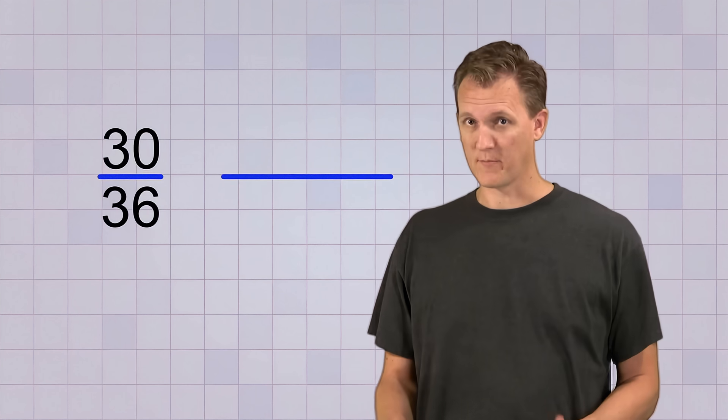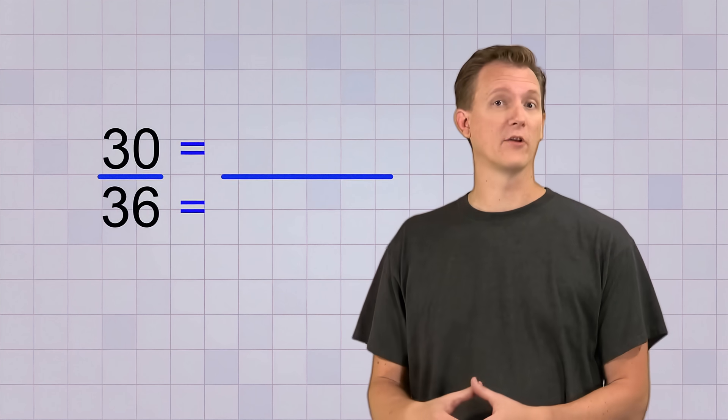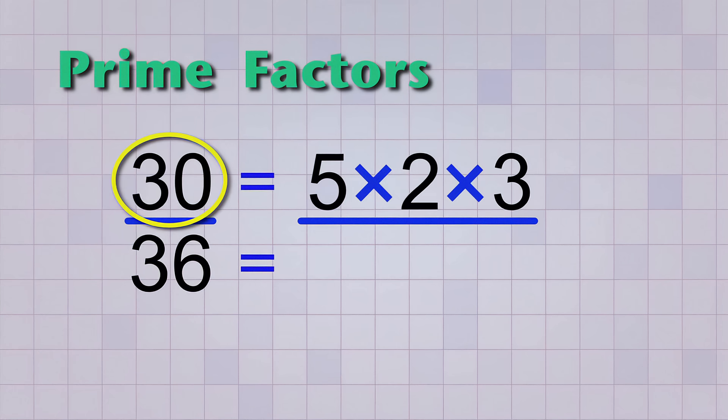I think we need to see another example, but a harder one this time. Let's simplify the fraction 30 over 36. The procedure's the same. Step one is we factor the top and bottom numbers all the way down to their prime factors. Let's do the top number first. 30 factors into 5 times 6. 5 is prime, but 6 can be factored into 2 times 3. So our 30 on top becomes 5 times 2 times 3.